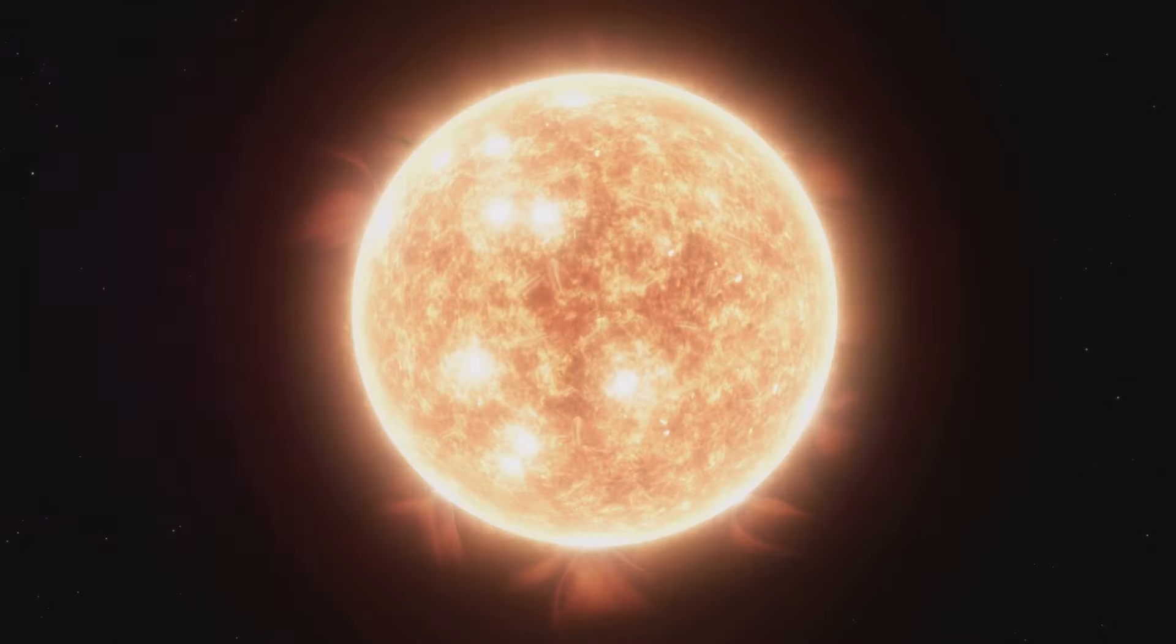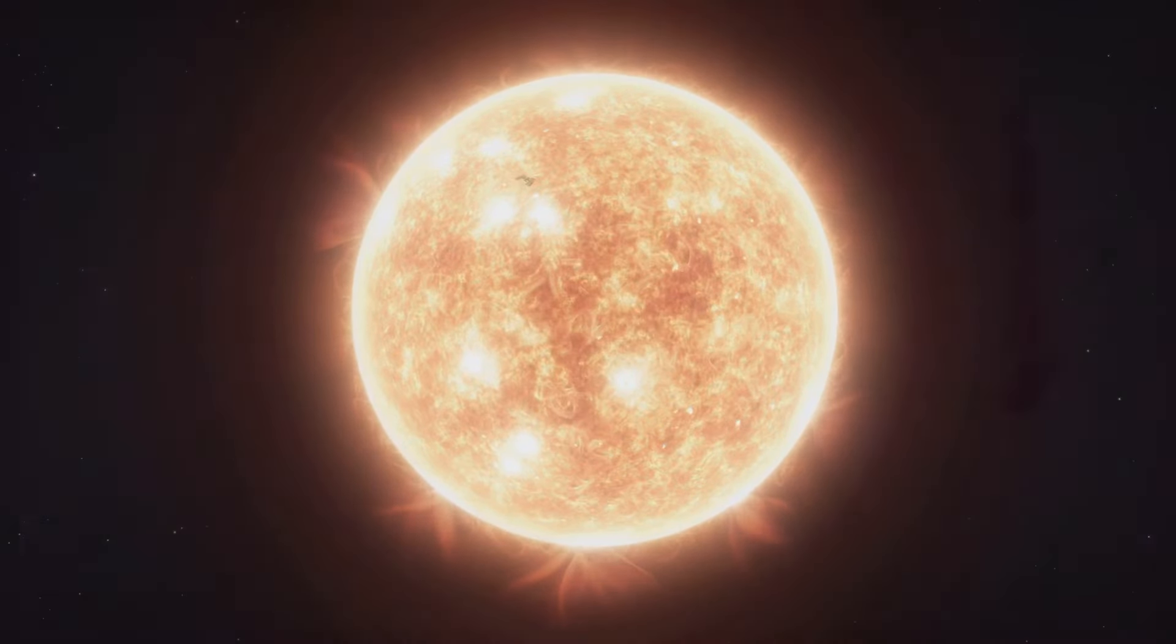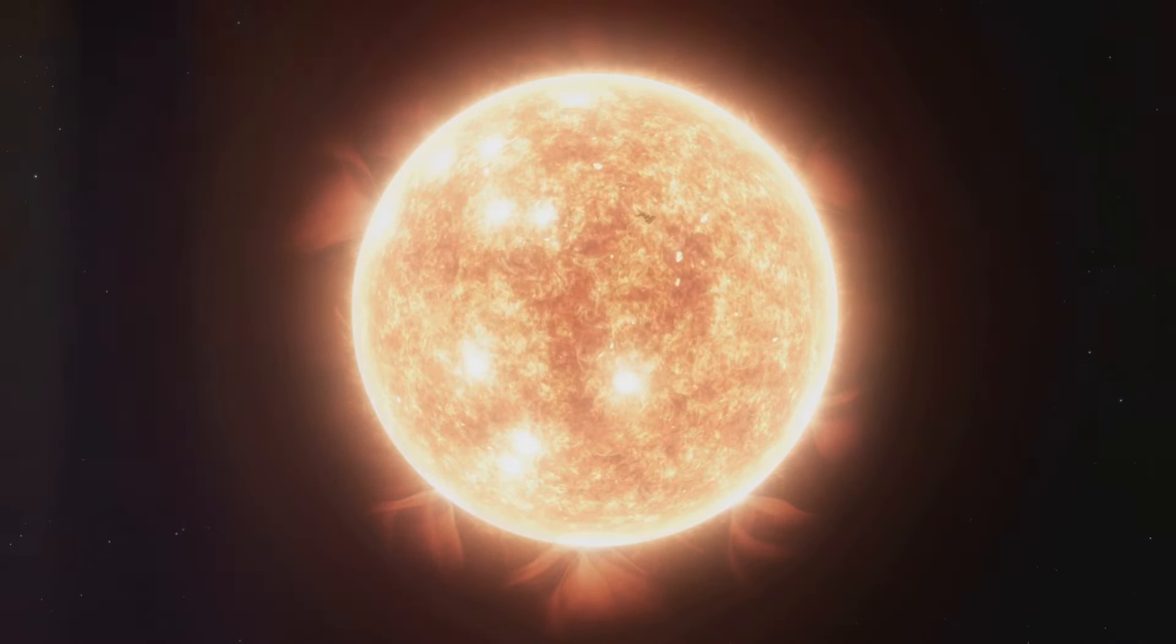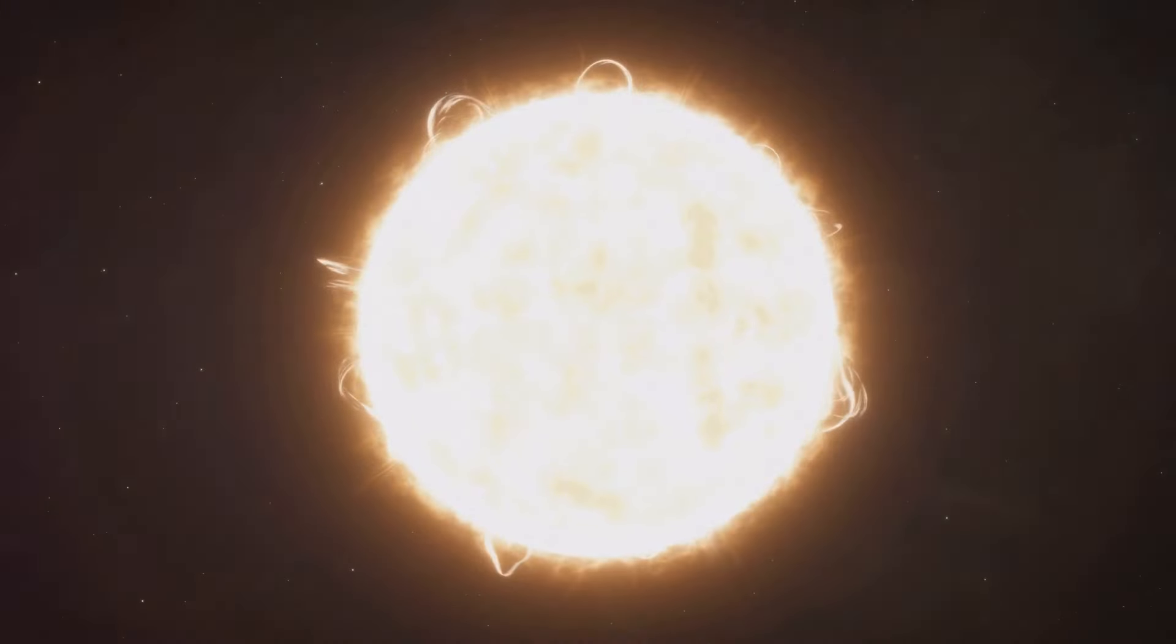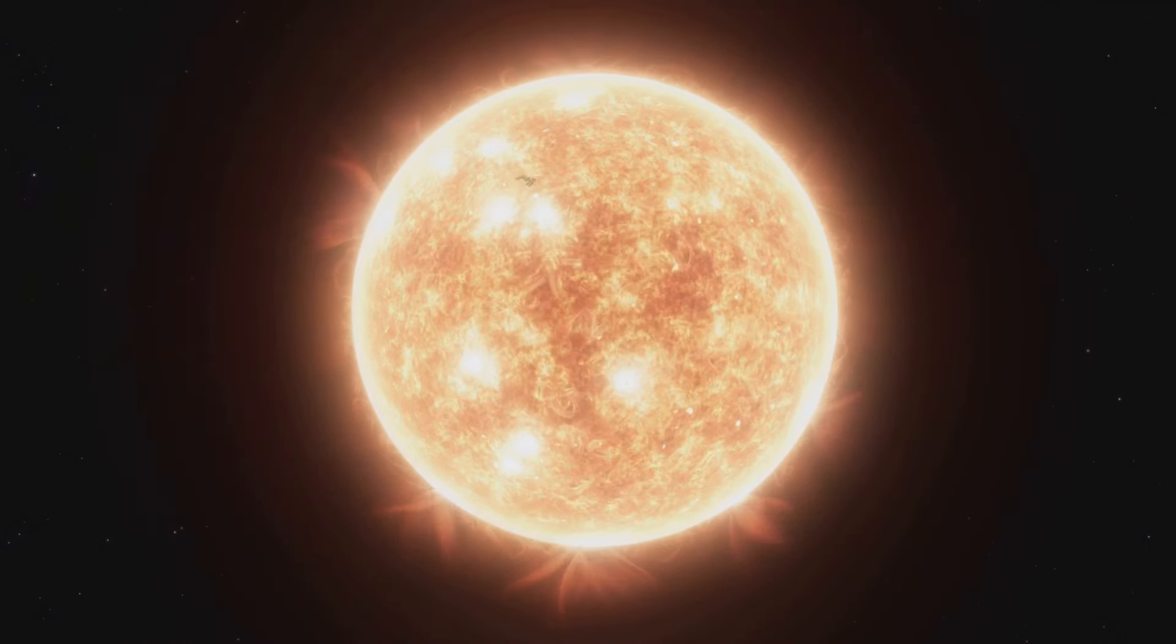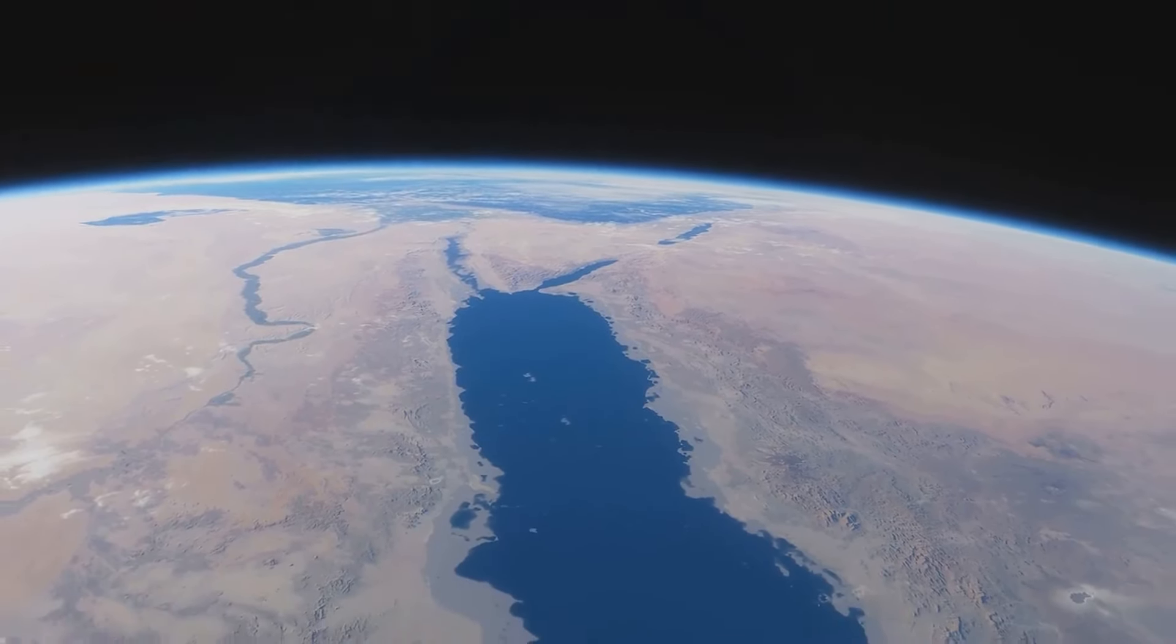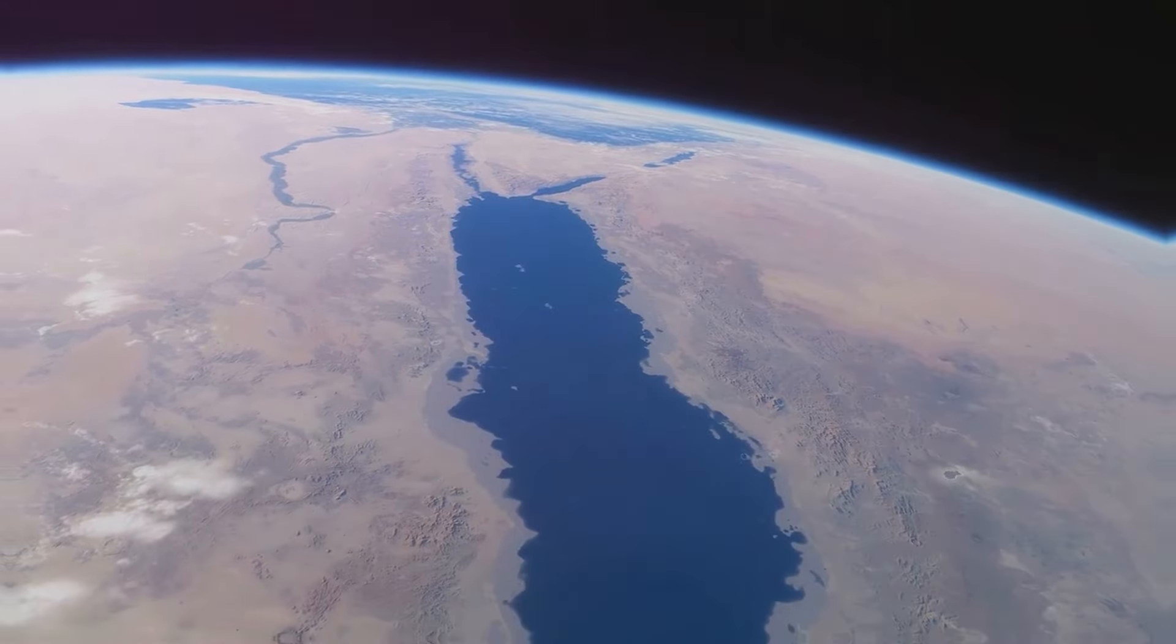Above the photosphere lies the chromosphere, a thin layer visible during solar eclipses, and the corona, the sun's outermost atmosphere, which extends millions of kilometers into space. The sun's influence extends far beyond its visible surface. Its powerful magnetic field creates sunspots, solar flares, and coronal mass ejections, releasing bursts of energy and charged particles into space. These solar activities can impact Earth, disrupting communications, affecting satellites, and creating stunning auroras in the polar regions.